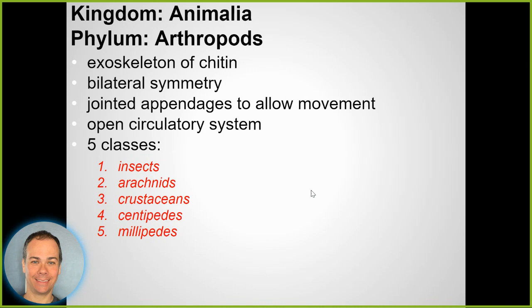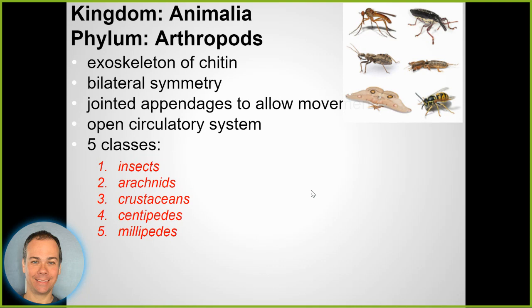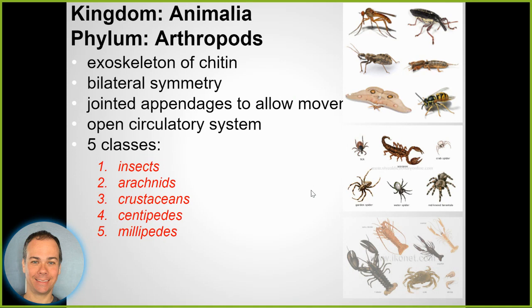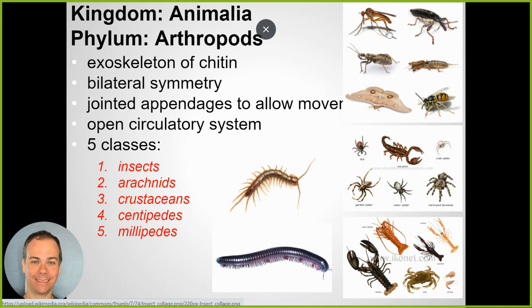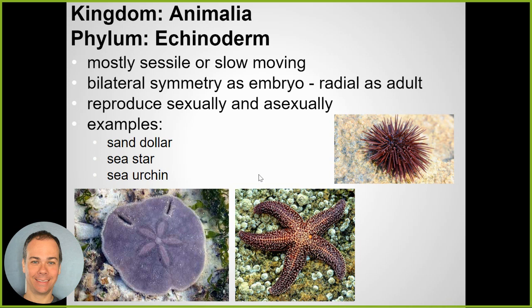Arthropods include insects, arachnids, millipedes, centipedes, and crustaceans. Arthropods have an exoskeleton, and they're the most diverse group of animals - there are more insects than any other group identified. Insects have six legs, arachnids have eight, crustaceans have ten, centipedes have one set of legs per segment, and millipedes have two sets per segment.